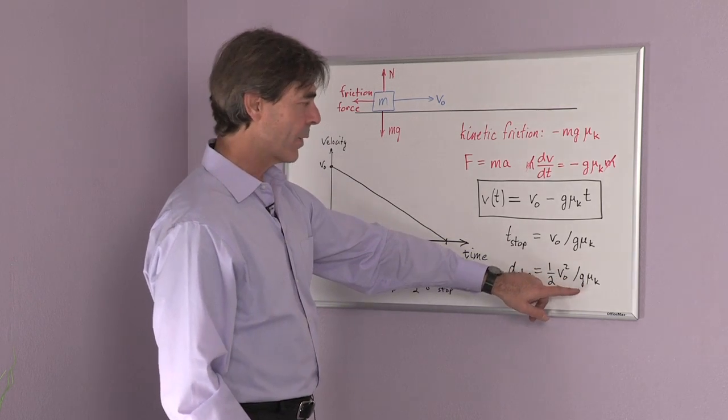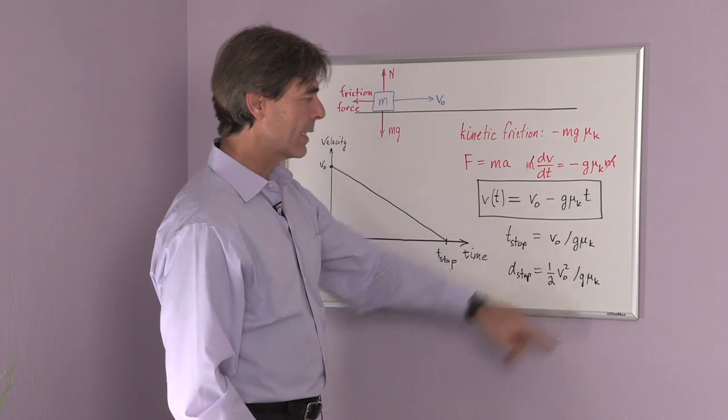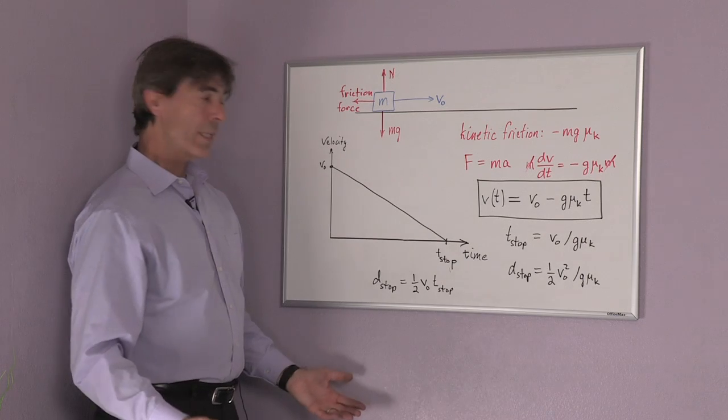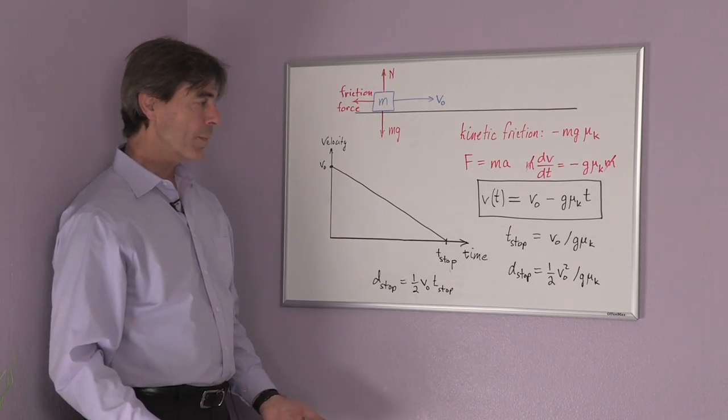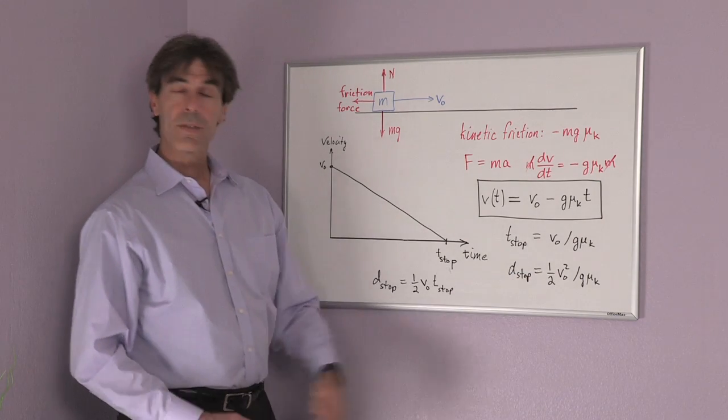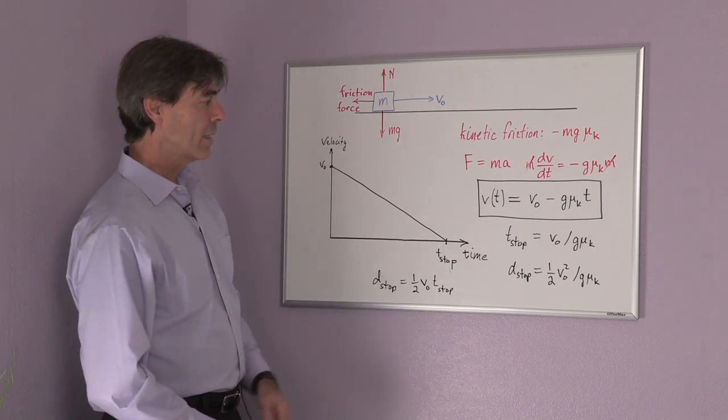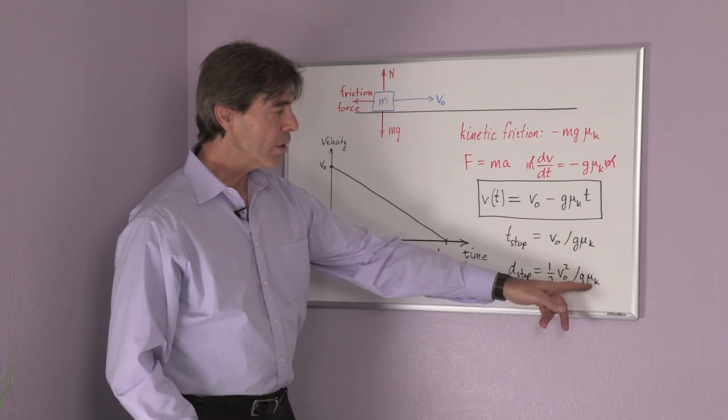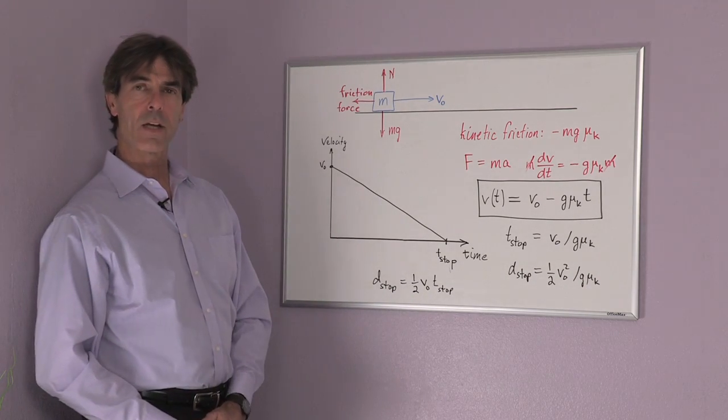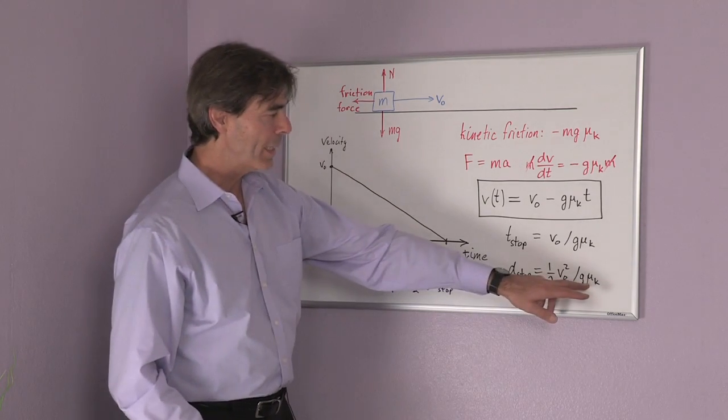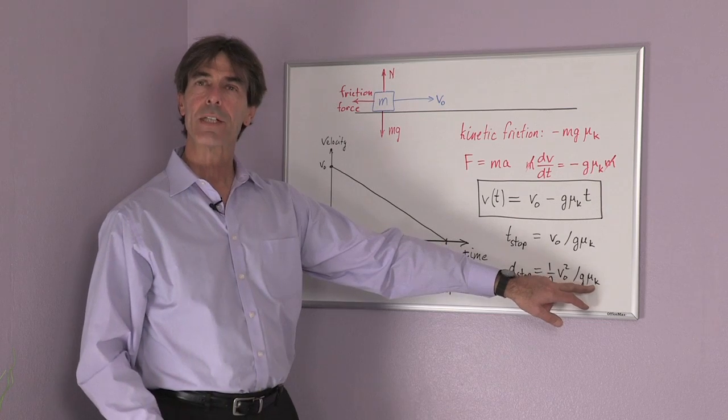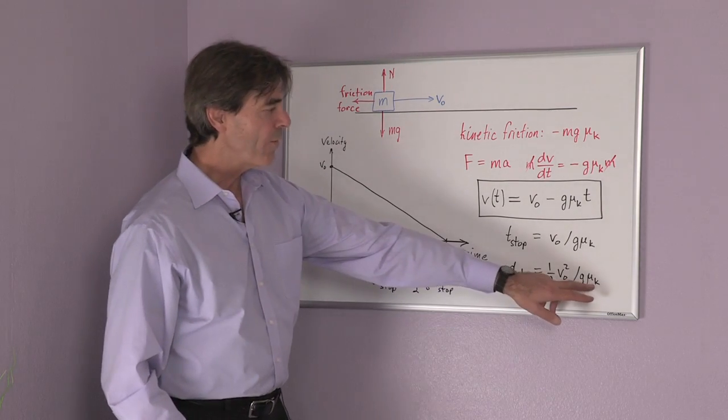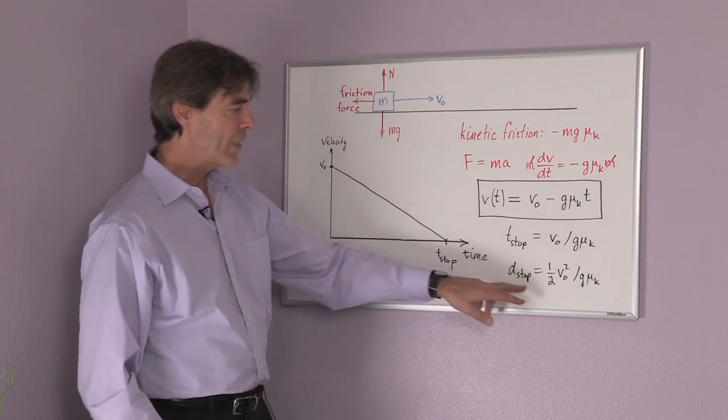This means when you're traveling in your car, if you move at a velocity twice as fast, you have four times the stopping distance. Also important in this formula is that the coefficient of kinetic friction needs to be as large as possible. You need to have good tires. If you have slick tires on a wet road, the coefficient of kinetic friction is small and your stopping distance is large.